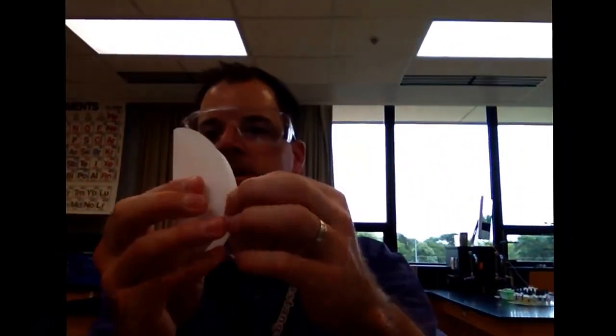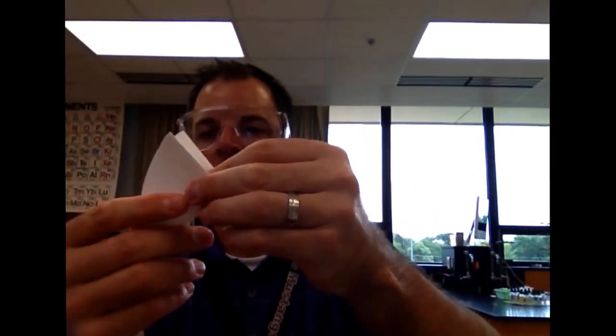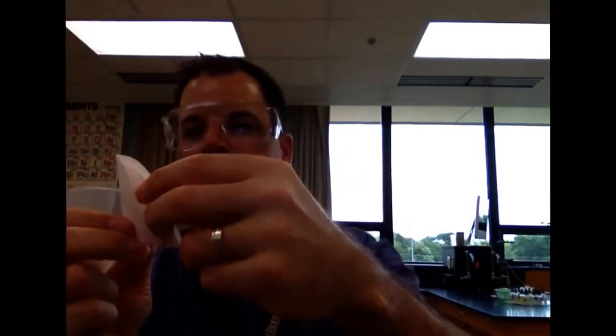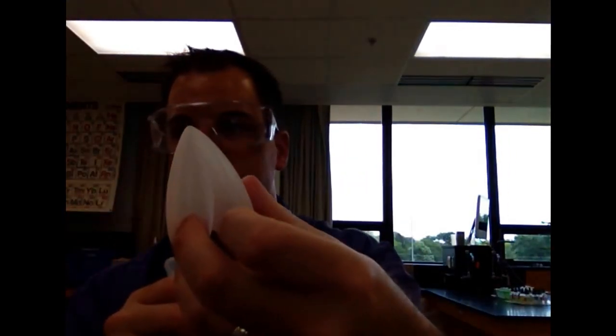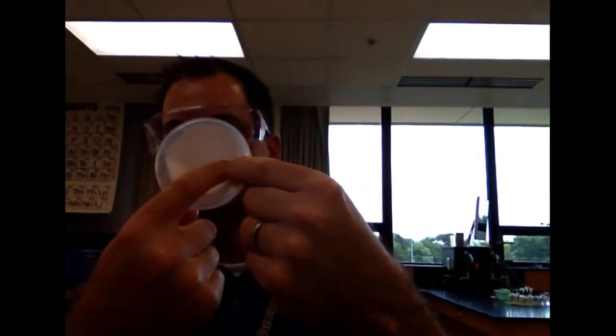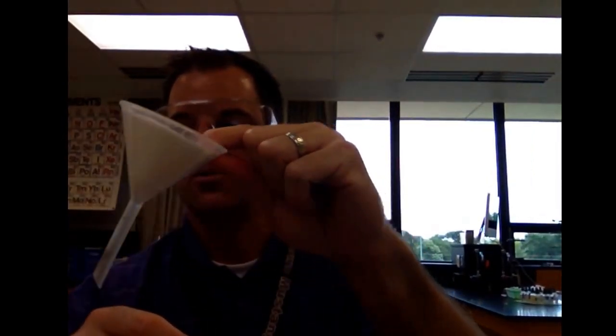You're going to fold it in half. You're going to fold it in half again. When you put it in your filter, you want to grab three sides—if you can see that, three sides—and pinch those together. You put that in your filter and you'll have no space in there. You'll wet this down with some distilled water and set that in there. Then you'll filter your sample.